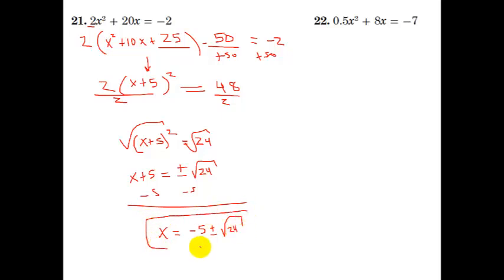In the book it's telling you to approximate these as a decimal value, so you can type them in your calculator. In the following chapter, we're going to learn how to simplify the square root of 24. Since we haven't learned that yet, your two options are to leave it as negative 5 plus or minus root 24, or to type in your calculator: negative 5 plus root 24 to get one answer, and negative 5 minus root 24 to get the other answer.